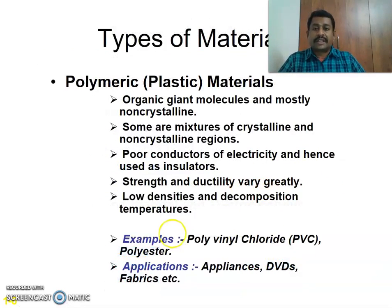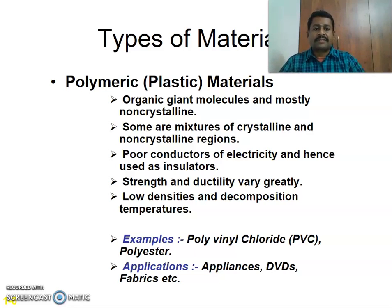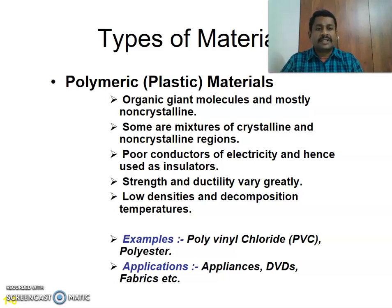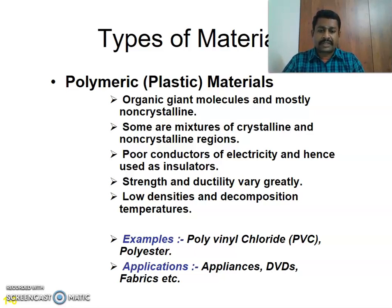There are also polymeric materials. Polymeric material is an organic molecule and mostly comes under the category of non-crystalline material, though some have a combination of crystalline and non-crystalline regions. Polymeric materials are poor conductors of electricity and are used as insulating material. They have high strength and ductility, low density, and low decomposition temperature. Well-known examples are polyvinyl chloride (PVC) and polyester. Applications include DVDs, appliances, and fabric.